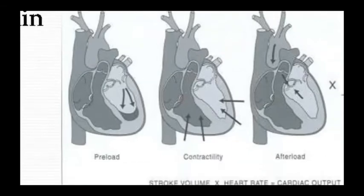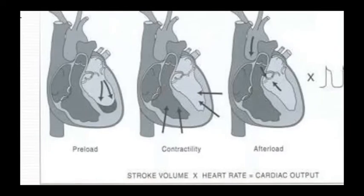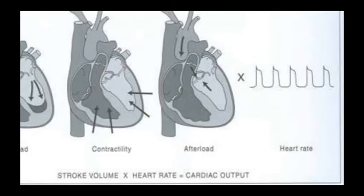The factors affecting stroke volume are: preload, then contractility, then afterload. Preload is the condition when blood is being filled into the ventricles before contraction. Afterload is the condition after the blood has been filled and the heart contracts against resistance. Stroke volume multiplied by heart rate gives us cardiac output.